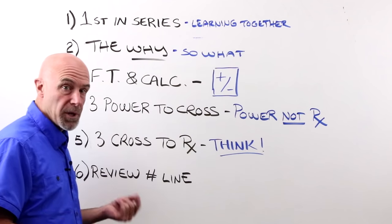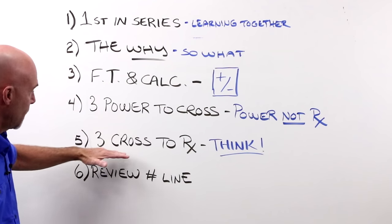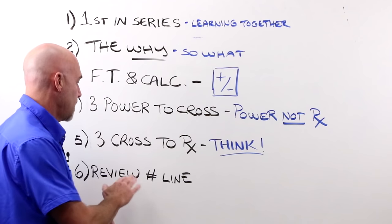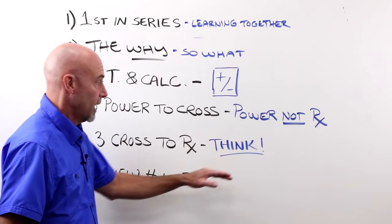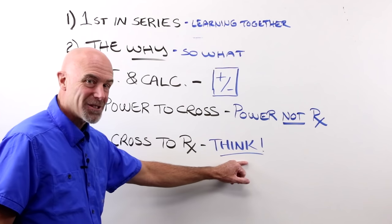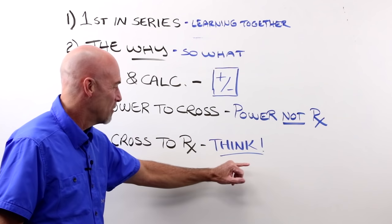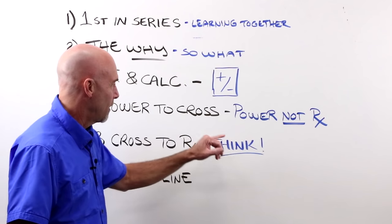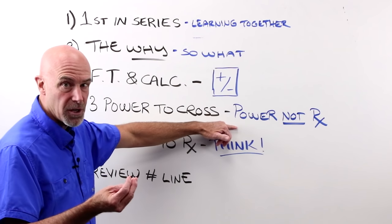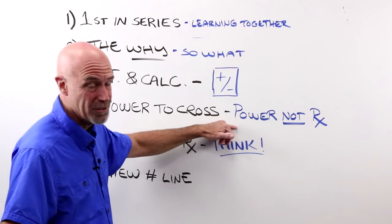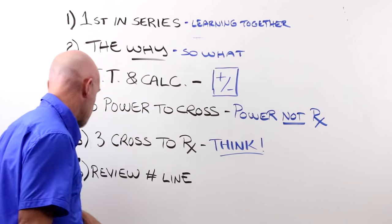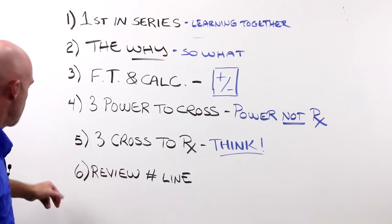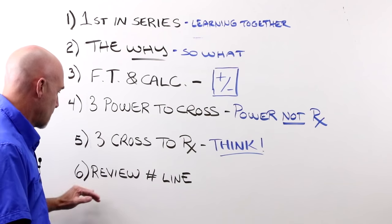Only after we have that down can we go to number five, and we're going to do three examples of taking a prescription off of the cross. Yep, that one means you got to think a little bit, so we'll have a little bit of work there. This, everything's right there in front of you, flat transposition, nothing much to it. This takes some thought.